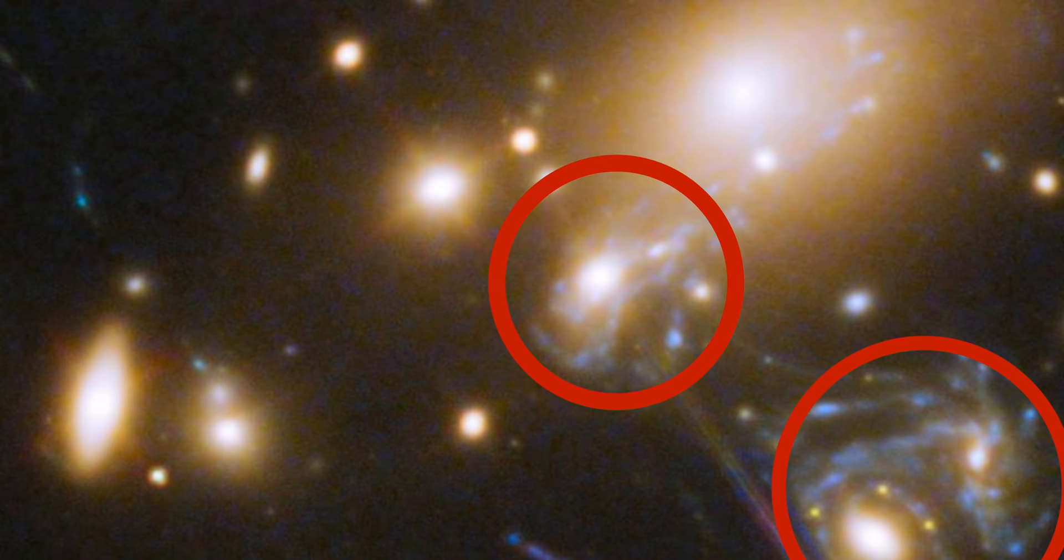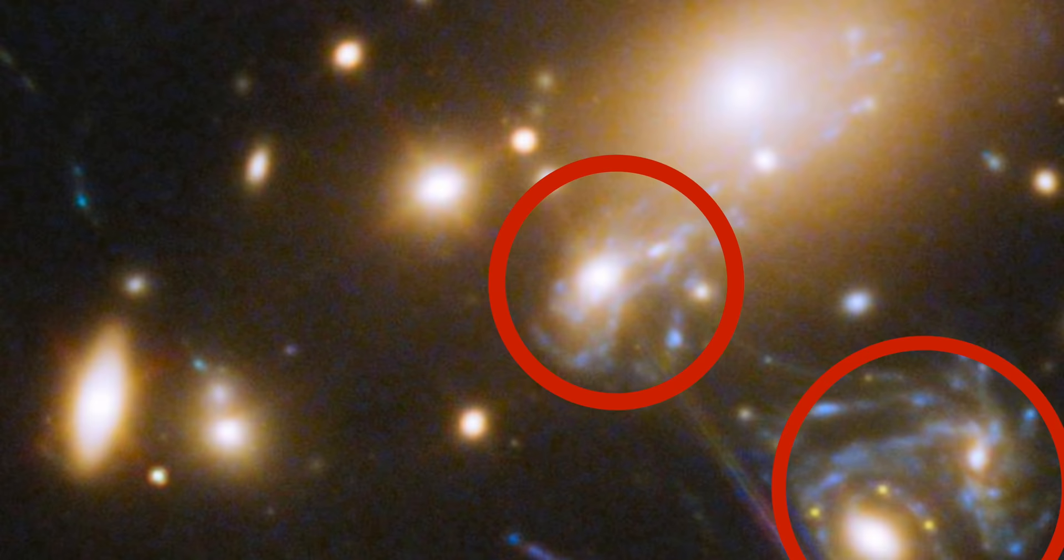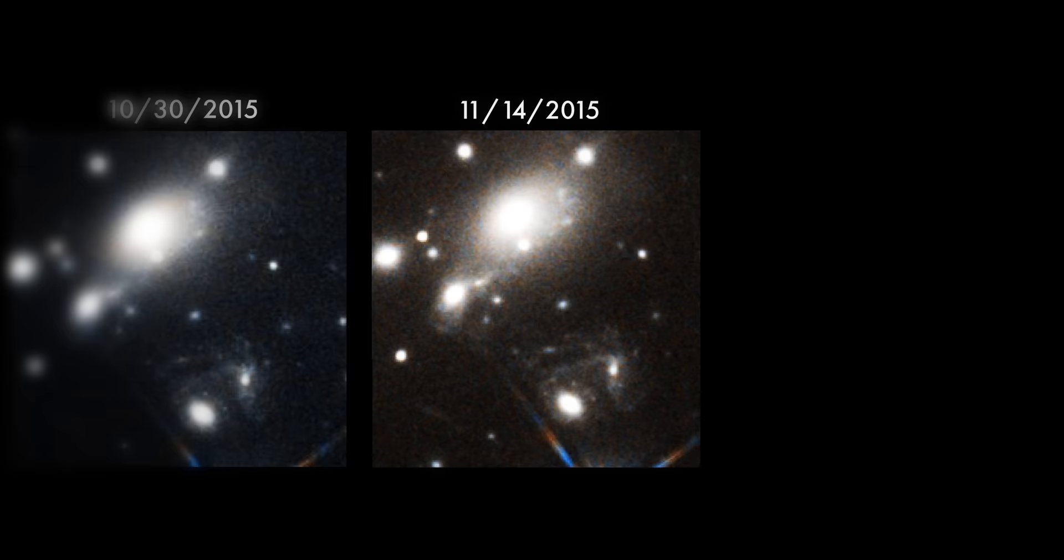But in the other image of the galaxy, they predicted the supernova would appear again in about one year's time. Almost exactly when it showed up in that Hubble image.